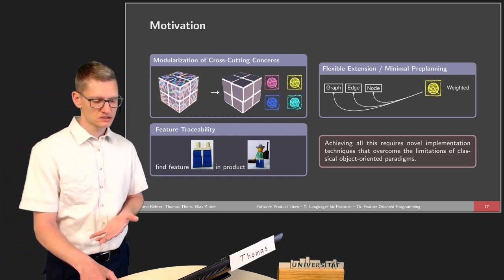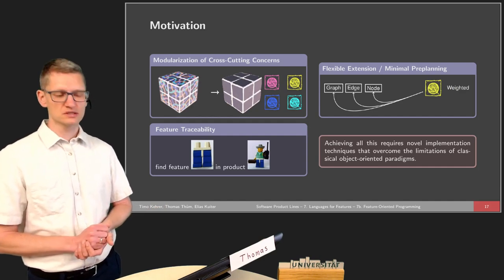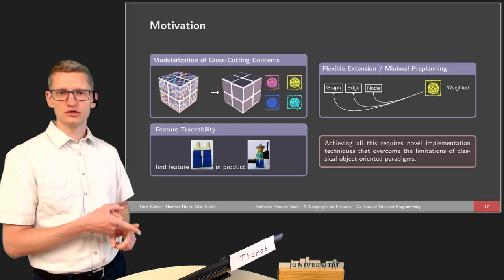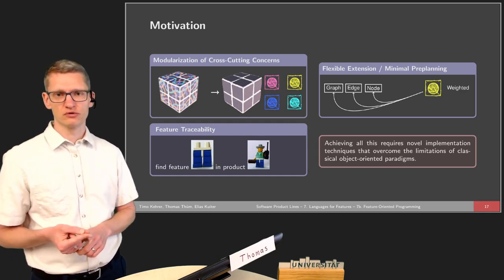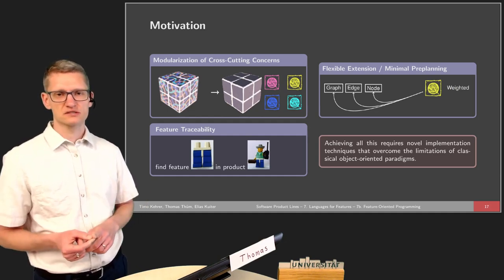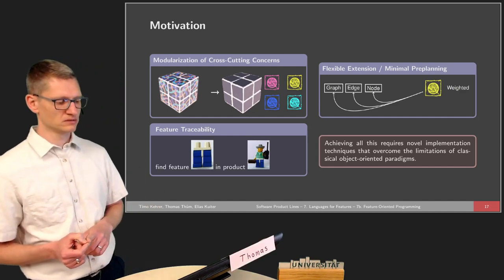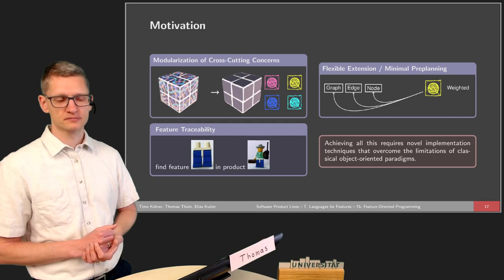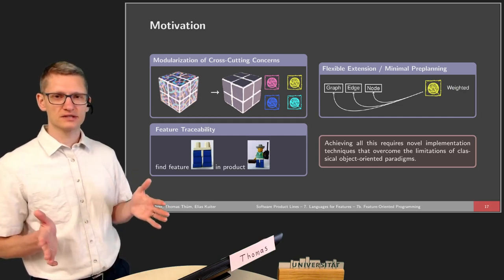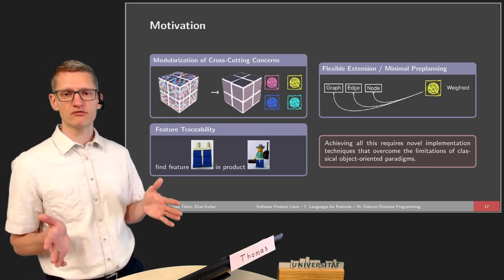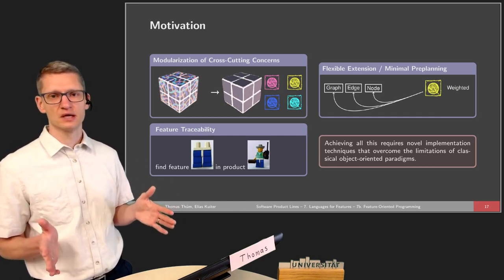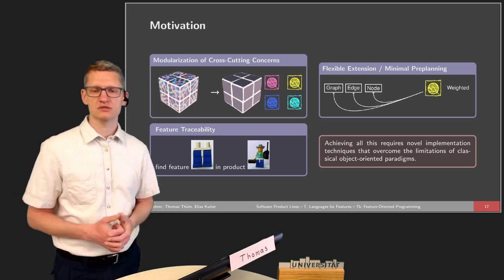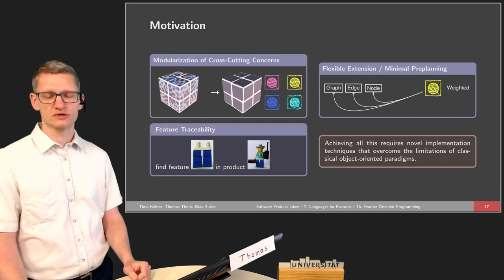In terms of existing techniques, we want to achieve two things that haven't been possible before. We want to have a flexible extension — to be able to provide new features, even those that haven't been envisioned before, for which no certain interfaces or extension points need to be made available previously. We want to have minimal pre-planning. Extensive pre-planning means we will always miss something, so we want something more agile that allows implementing extensions not envisioned by existing extension points and interfaces.